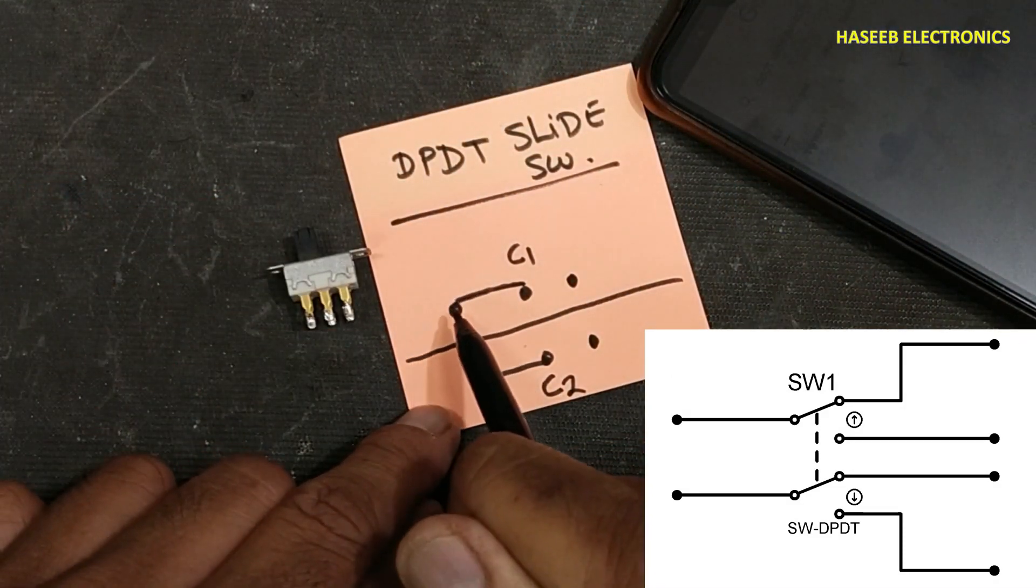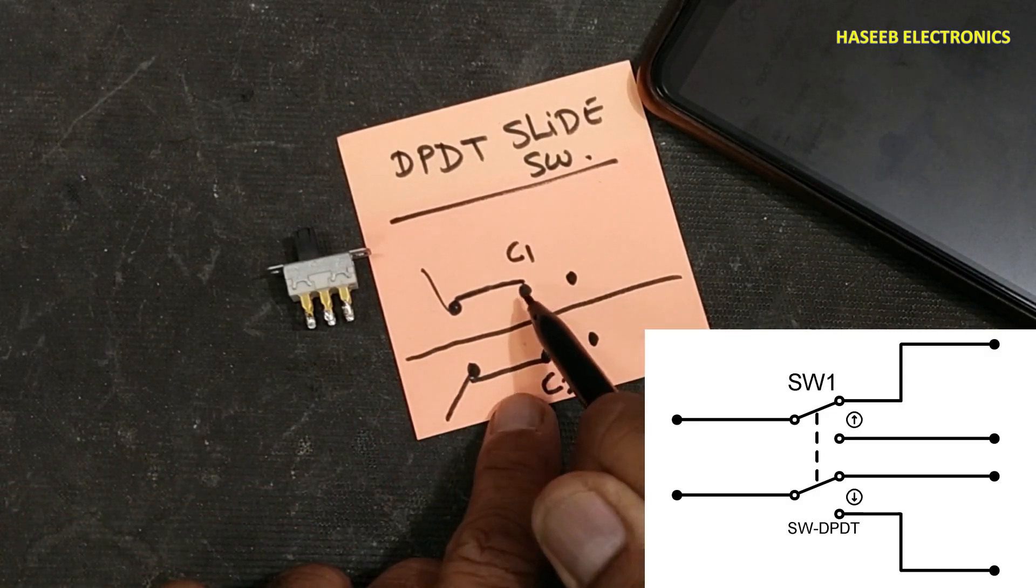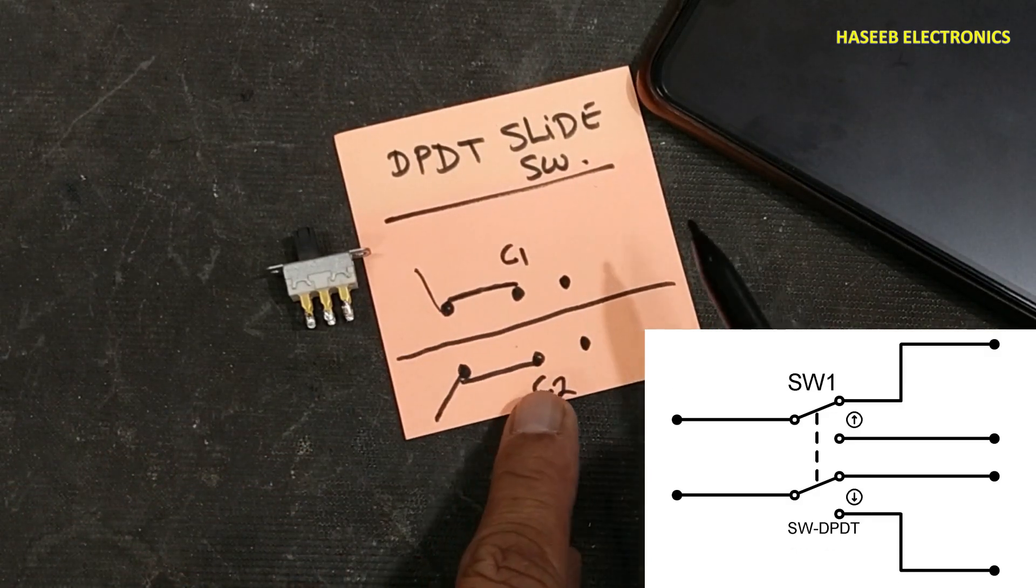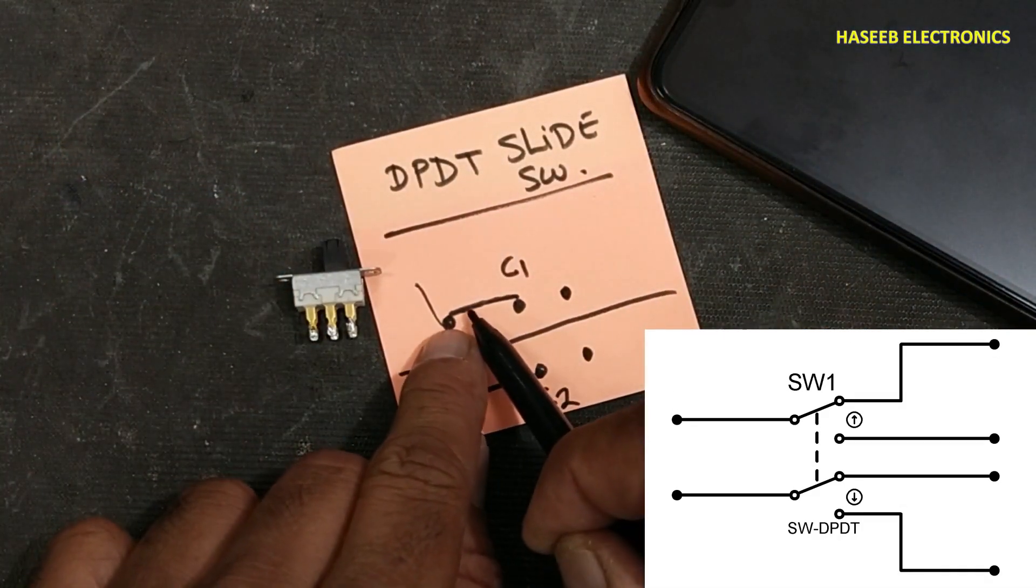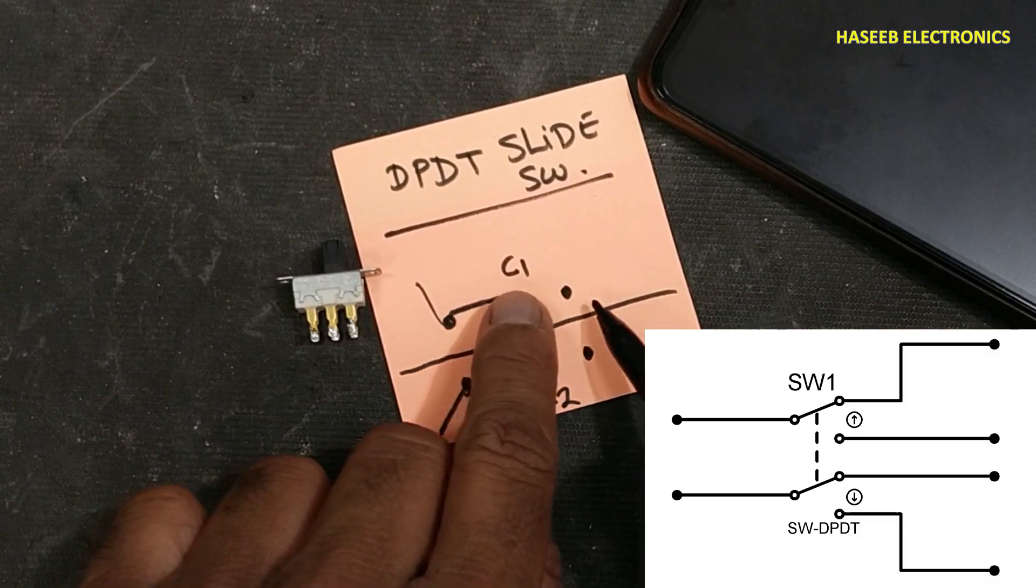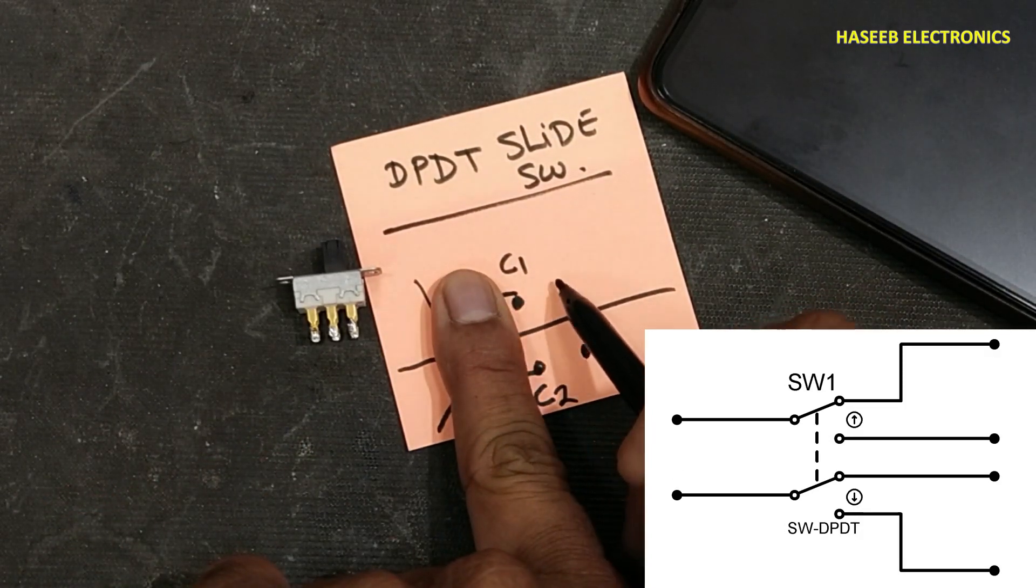When we move this switch to this side, this slider will shift from here to here. At that time it will open from here and it will make these two connections.